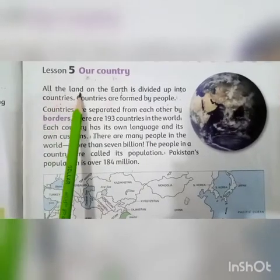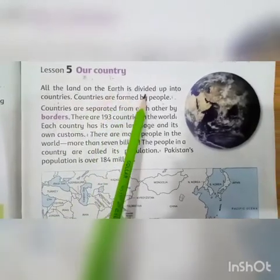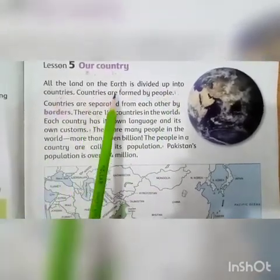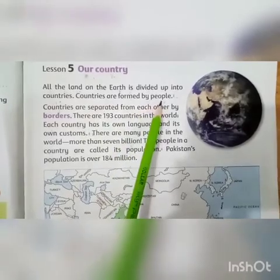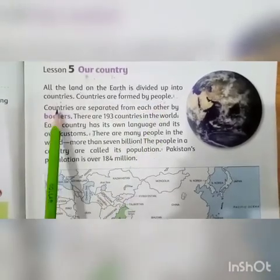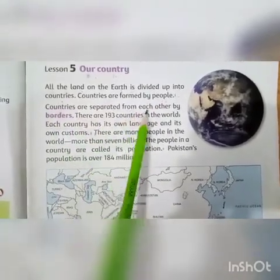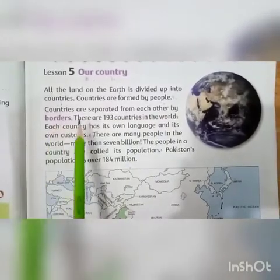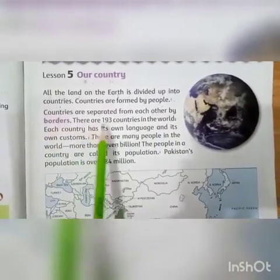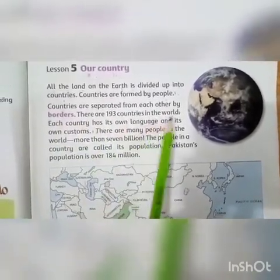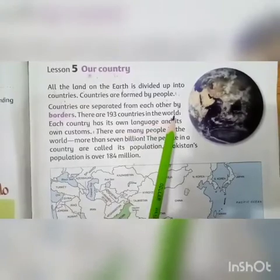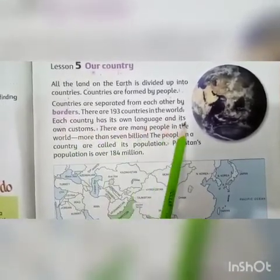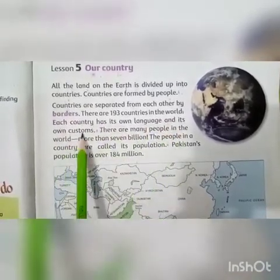All the land on the earth is divided up into countries. Countries are formed by people. Countries are separated from each other by borders. There are 193 countries in the world. Each country has its own language and its own customs.